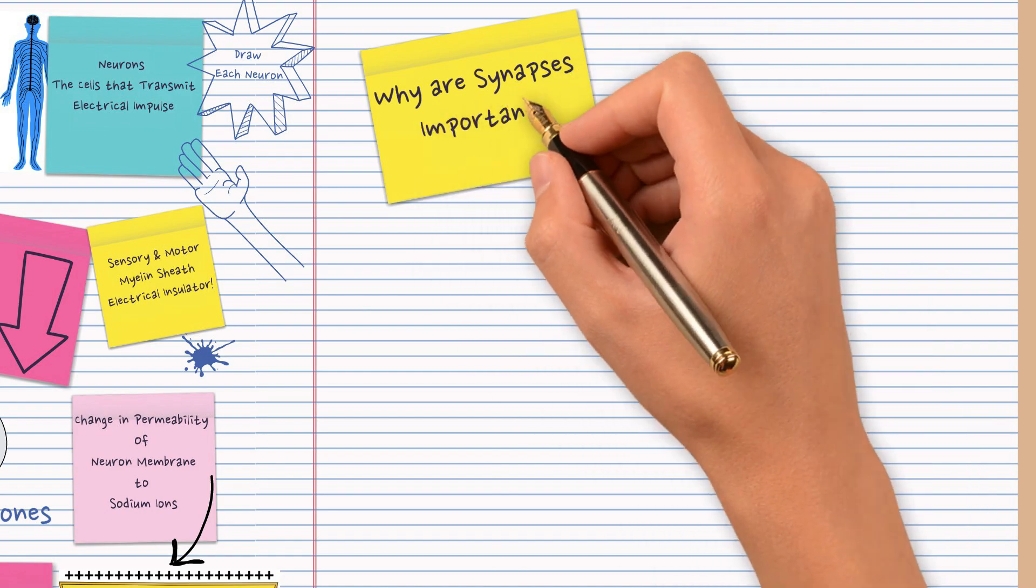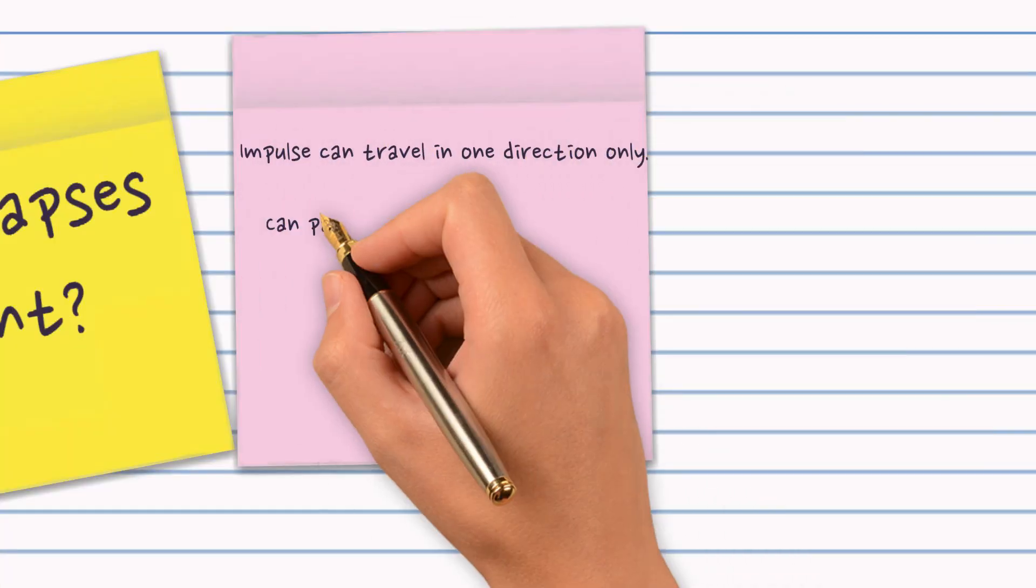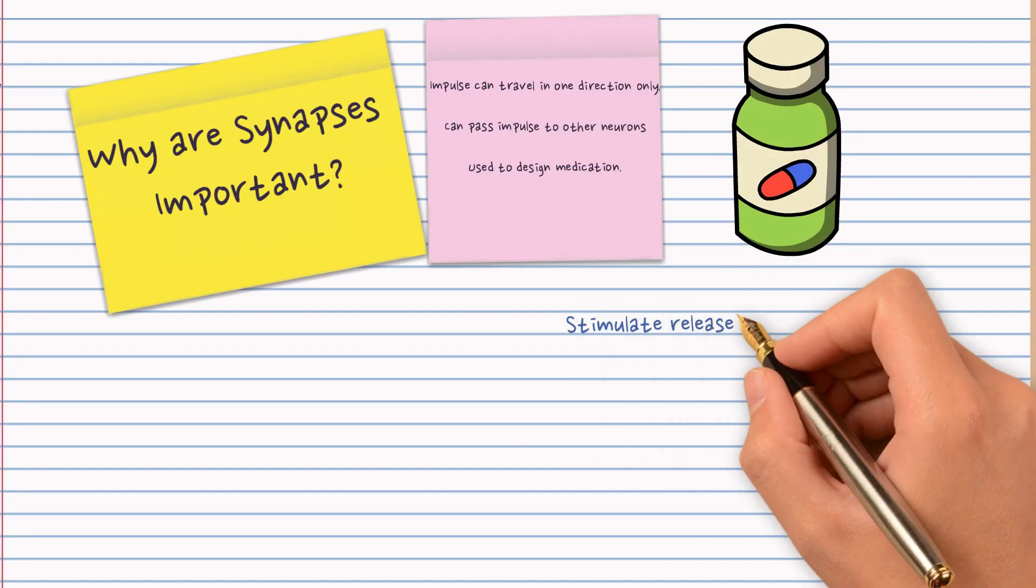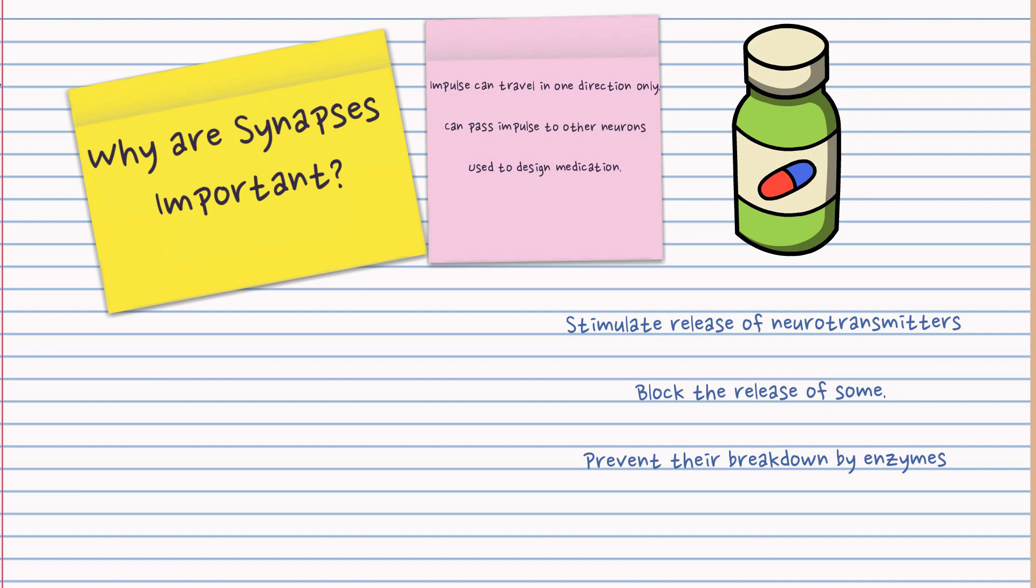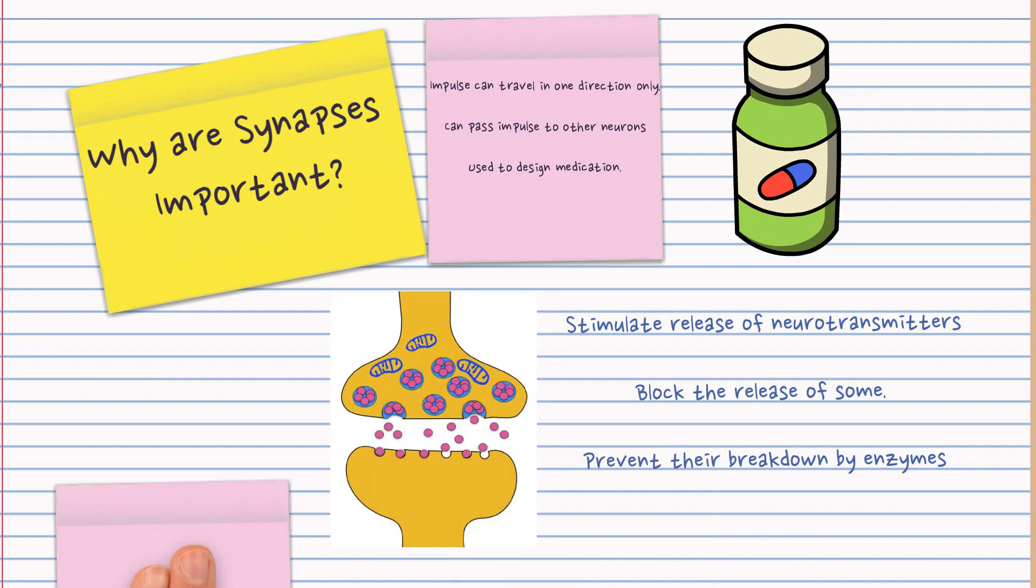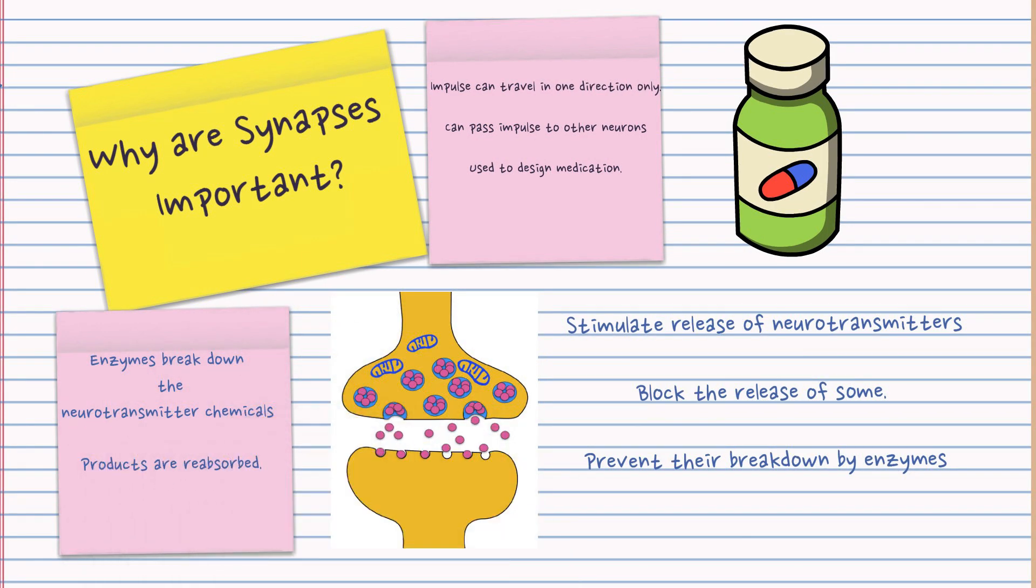One, they make the impulse travel in one direction only. Two, they're a way of passing on impulses from one neuron to another and three, they're used in medication design. Some medications are based on stimulating the release of neurotransmitters, blocking them or preventing their breakdown. Know the role of enzymes in breaking down those neurotransmitters and revise fully Parkinson's.